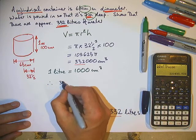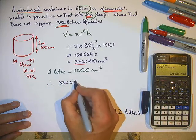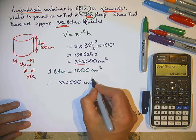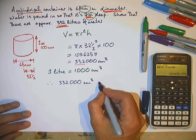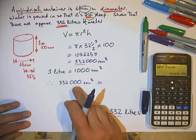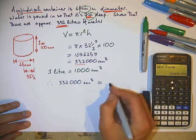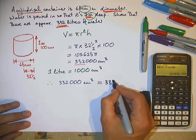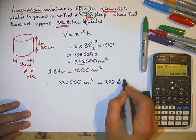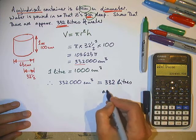Therefore, 332,000 centimetres cubed equals, divide by 1,000, 332 litres, as required.